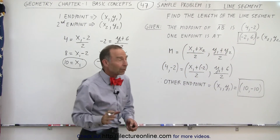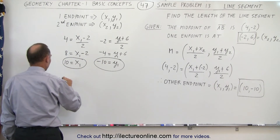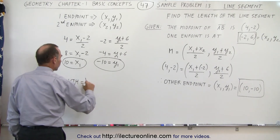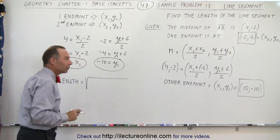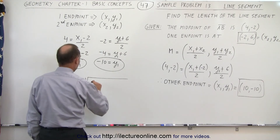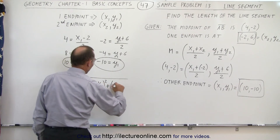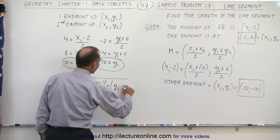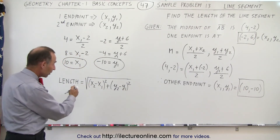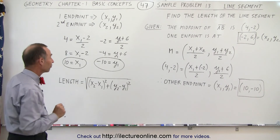Having the two endpoints now allows us to find the length of the line segment. The length is equal to the square root of the differences squared: the square root of (x2 - x1) squared plus (y2 - y1) squared. It doesn't matter which order we place them in — x1 minus x2 or x2 minus x1 — as long as we stay consistent for both.